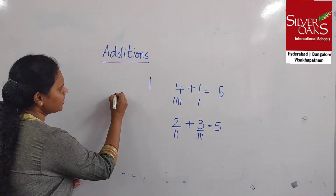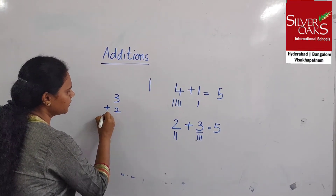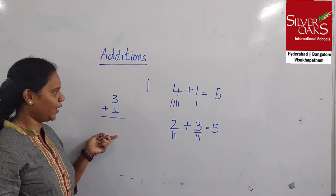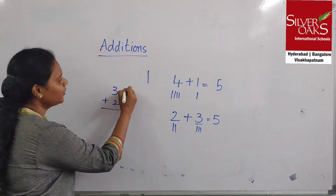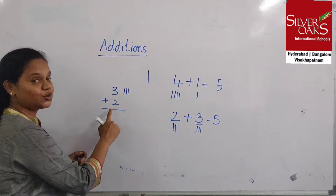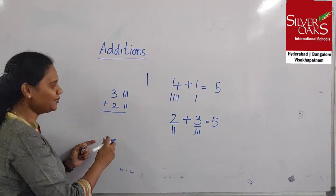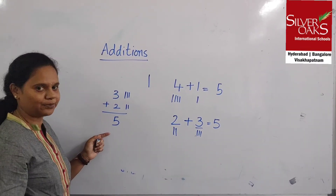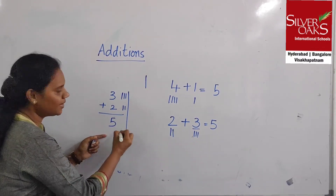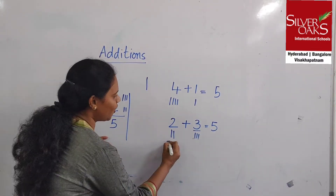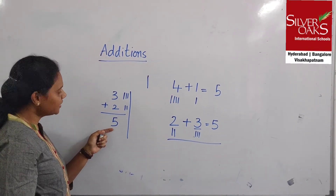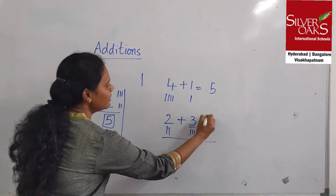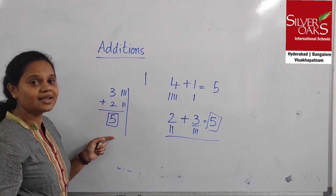Can we do additions in this way? Yes, we can do additions in this way. For 3 we need to draw 3 lines. For 2 we need to draw 2 lines. Shall we count? 1, 2, 3, 4, 5. So the answer is 5. This is vertical addition. If you see vertical addition and horizontal addition, the answer will be the same.